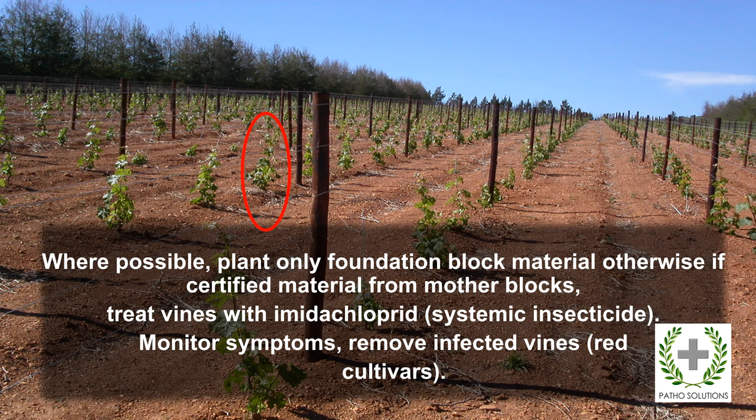There is always still a chance that from mother blocks some infected vines can pass through to growers. We therefore recommend that growers who cannot buy foundation block material — which is more expensive and generally only bought by those very interested in leafroll control — if they are getting material from mother blocks, on planting they should also treat these vines with a systemic insecticide. This allows the vines to grow and develop symptoms, but not serve as a source from which they could infect surrounding vines.